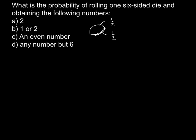So we can just add these probabilities, and we will get two over two, and if we divide two by two, this is one.